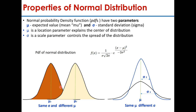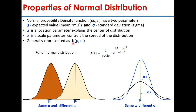For example, here I have shown two distributions which have the same spread — meaning they have the same sigma values — but they have different mean values, mu1 and mu2. So mu1 and mu2 are location parameters on the x-axis. A normal distribution is generally represented as N(μ, σ), where mu is the mean and sigma is the standard deviation.